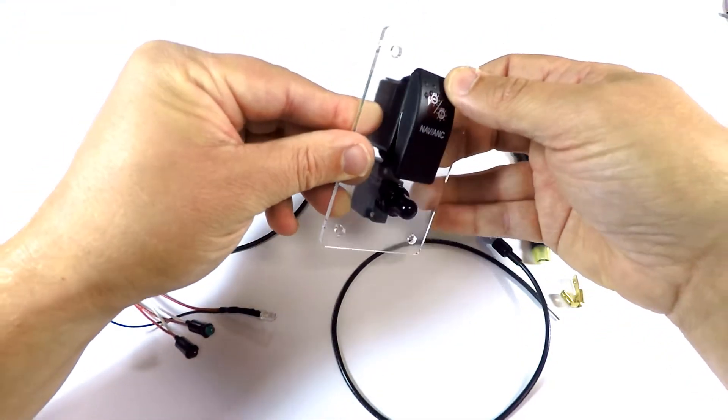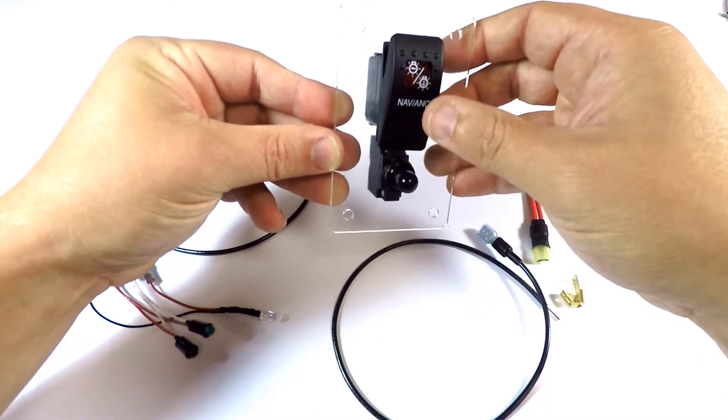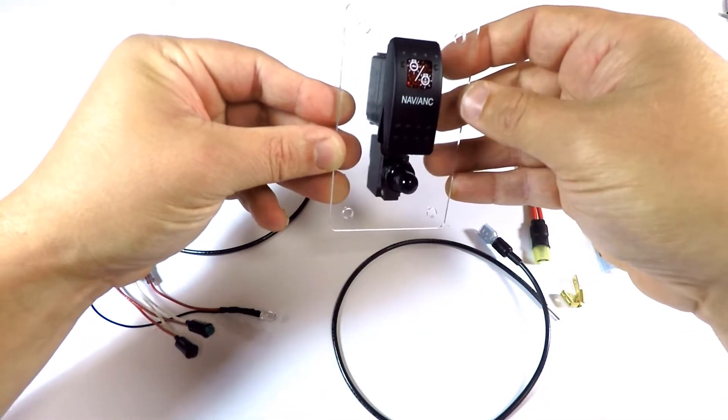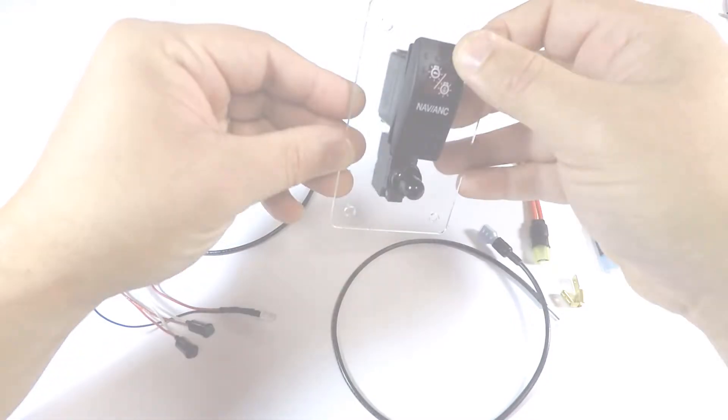This is a seven-terminal, double-pole double-throw, on-off-on switch. We'll wire it today where switch position up is both running lights and anchor lights, and switch position down is anchor lights only.